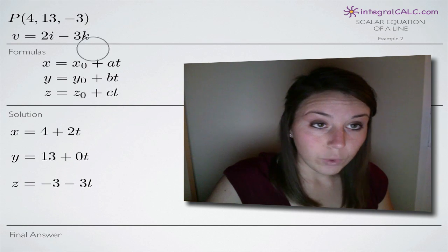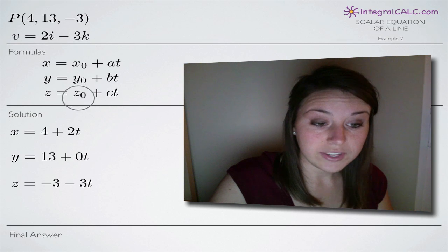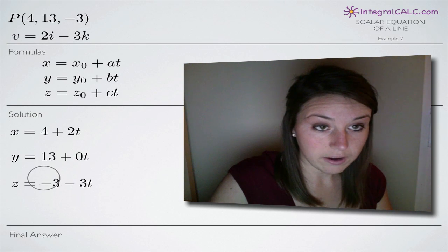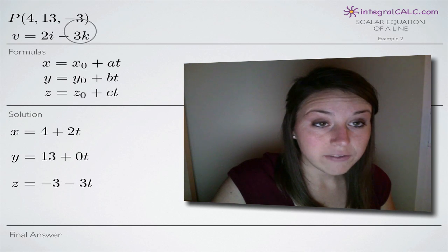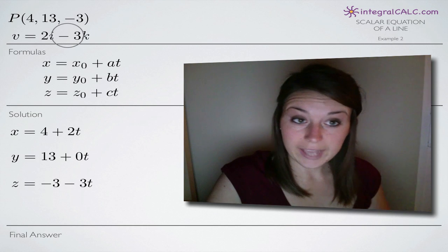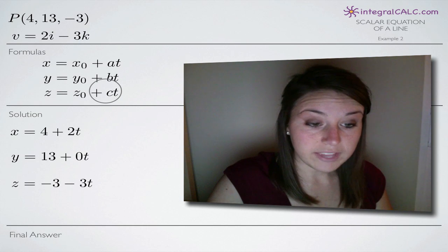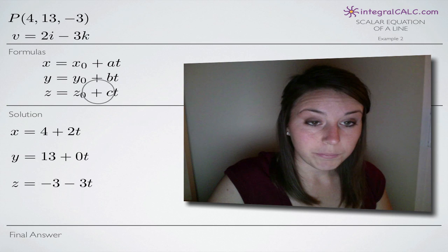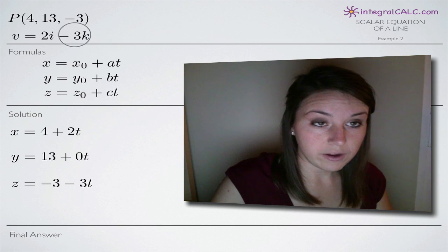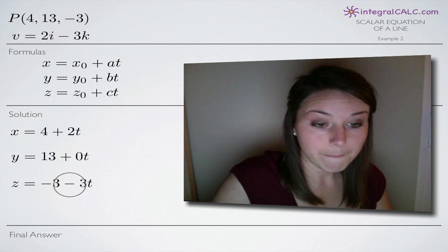For z, we'll plug in the point -3 for z sub zero so we have -3 here and then we're plugging in -3 because it's the coefficient on k, plugging that in for c. So instead of plus c, we'll end up with minus 3t.